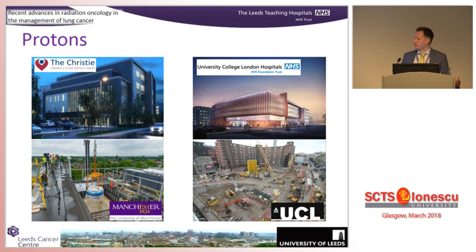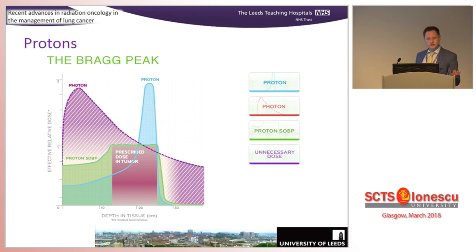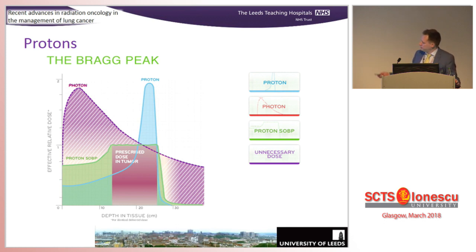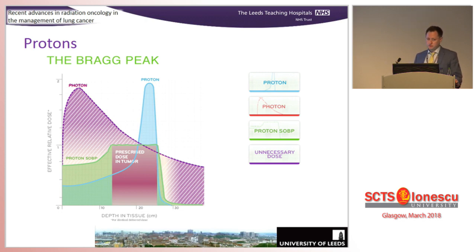Why are protons so expensive - each centre costs about 150 million pounds - but also why are they potentially advantageous? Our standard beam is a photon beam: as it hits the patient, the maximum dose is usually around one and a half to two centimetres underneath the skin, and that dose falls as you go towards the tumour, so we have to use lots of beams. But protons have a property called the Bragg peak - they're a heavy particle, they go through the body, and when they get to a certain depth they deposit their energy very quickly, then the energy falls off very rapidly afterwards, giving a very steep dose gradient between tumour and normal tissue.